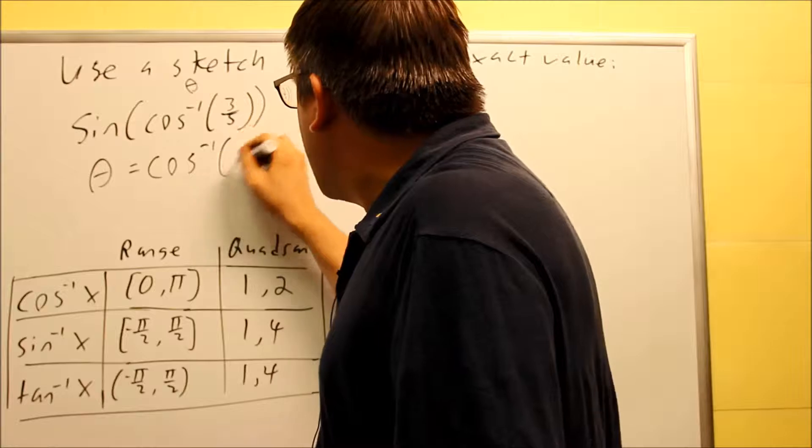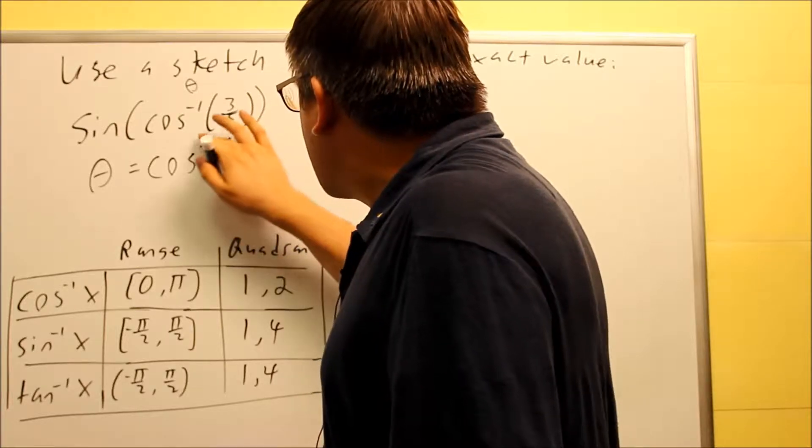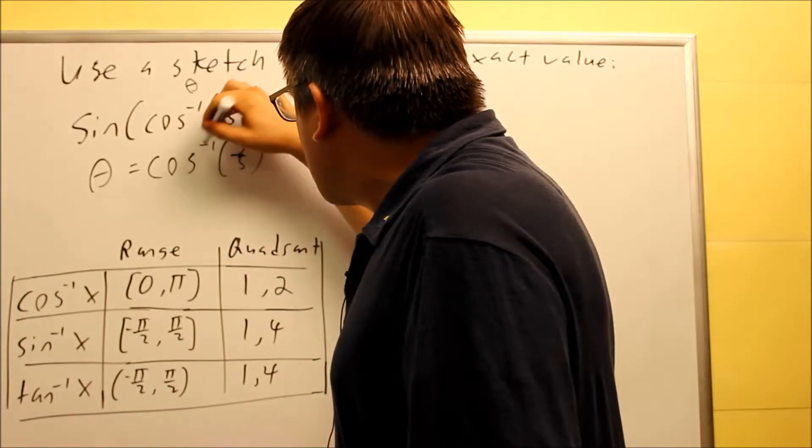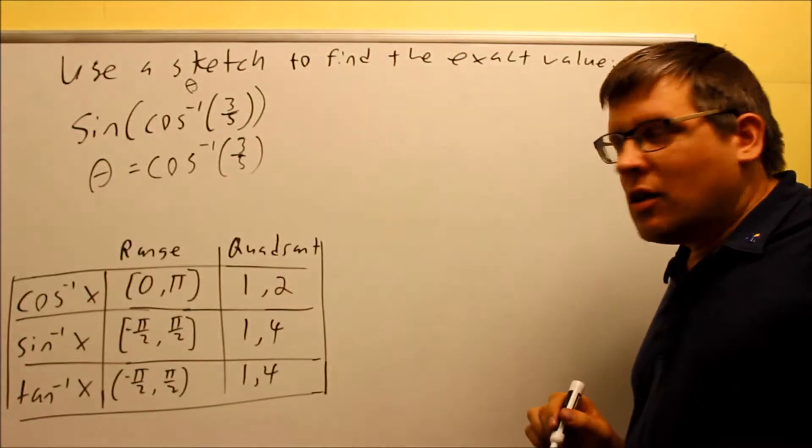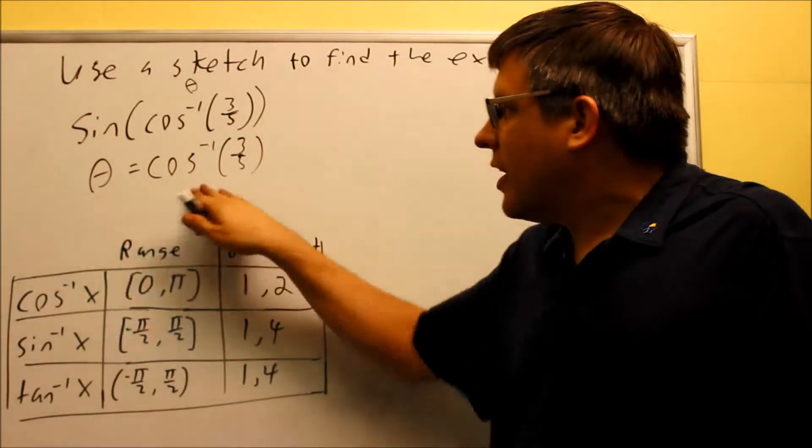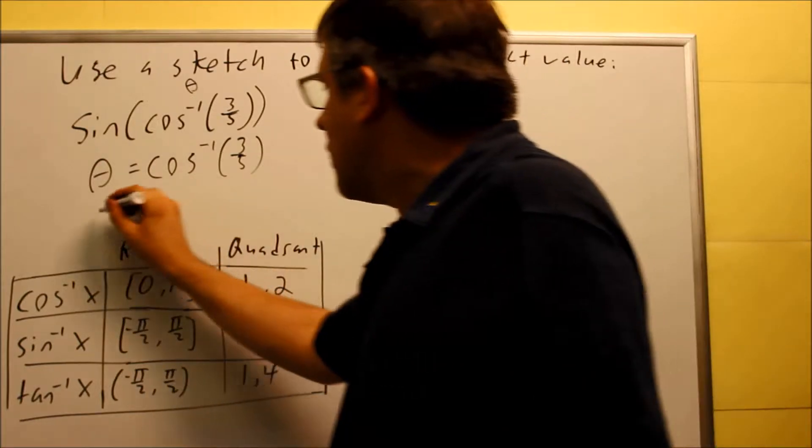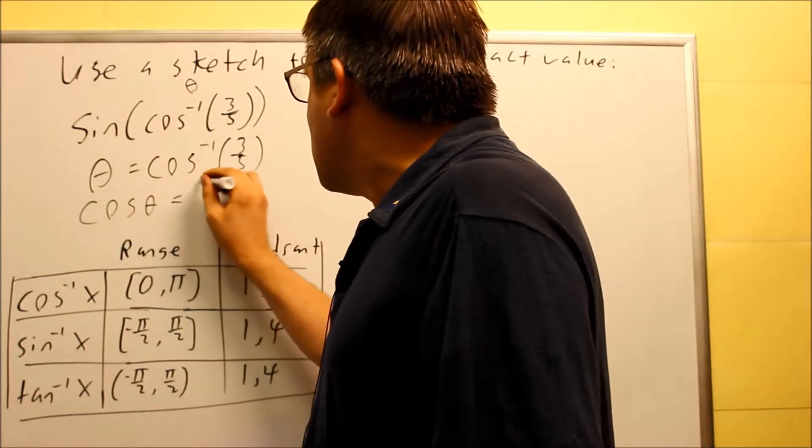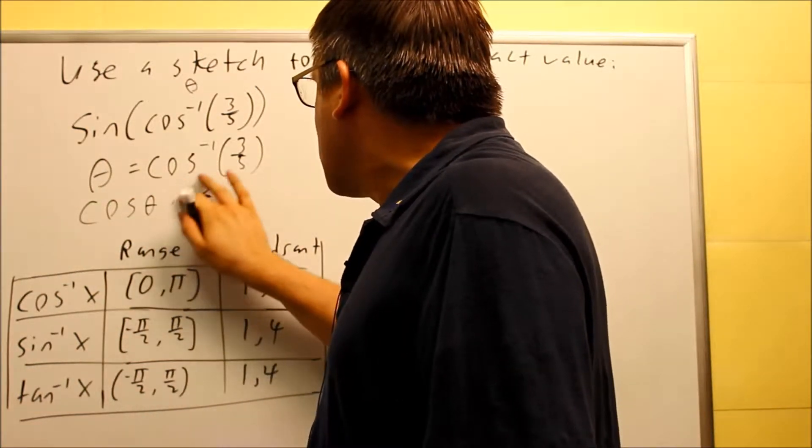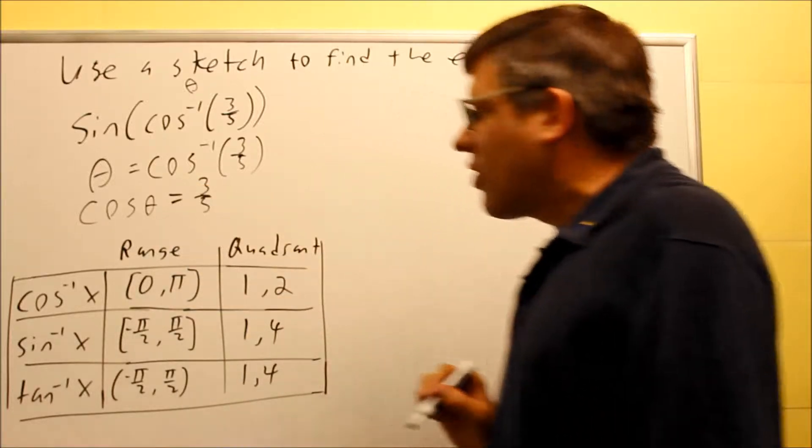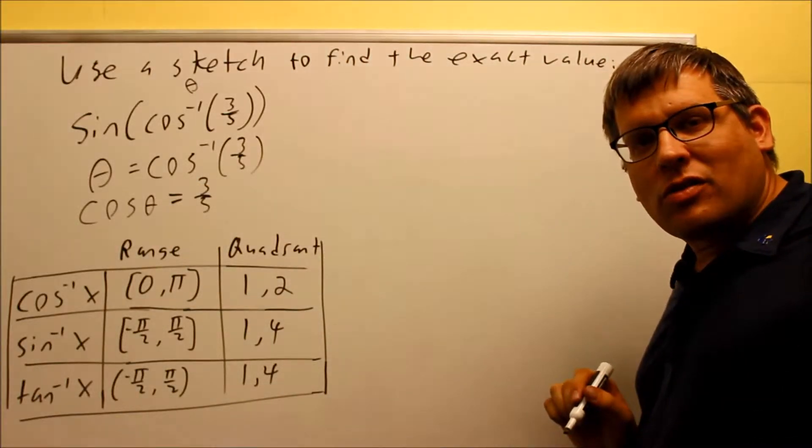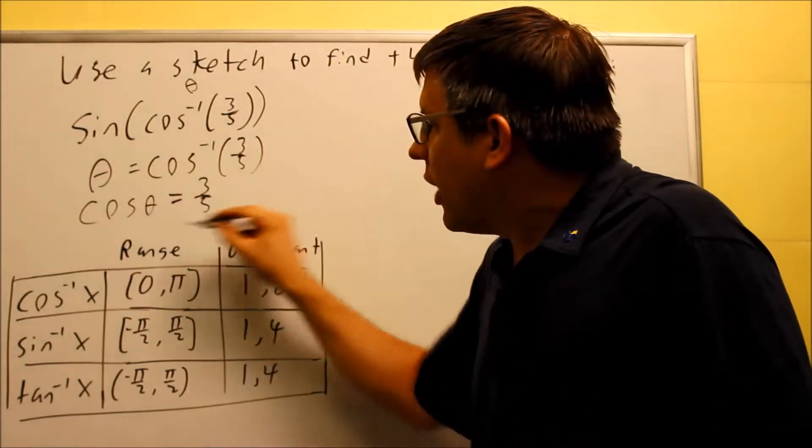So I have inverse cosine of three-fifths. So that's basically the first part of it, how we can interpret that. Now, if I apply a cosine to both sides, then what I would get is cosine theta is equal to three-fifths. So because I have cosine theta equals three-fifths, now I have a way to set up a triangle.